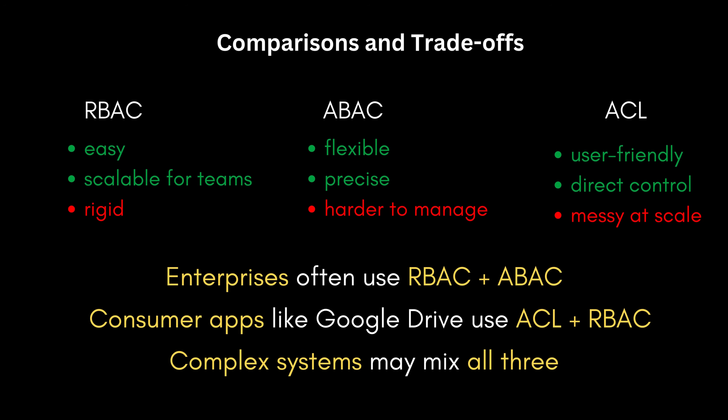Let's compare all three models side by side. RBAC is easy to implement and scalable for large teams but can be quite rigid. ABAC is highly flexible and precise but more complex and harder to manage. ACLs are user-friendly and perfect for document sharing but become messy at large scale. In practice, enterprises often combine RBAC with ABAC; consumer apps like Google Drive use ACLs alongside RBAC; and the most complex systems mix all three to achieve the right balance of security and usability.